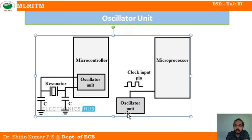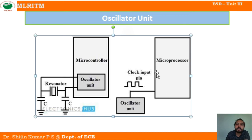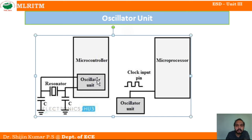An oscillator circuit is present externally, generating a clock signal that is given directly to the microprocessor, which works based on that clock input pulse. In contrast, a microcontroller has an oscillator unit that is built in inside the microcontroller.